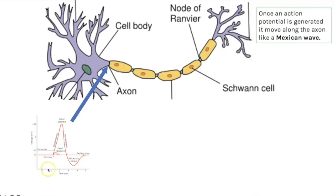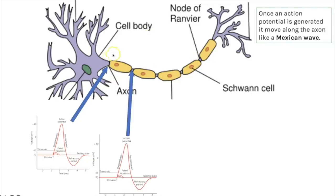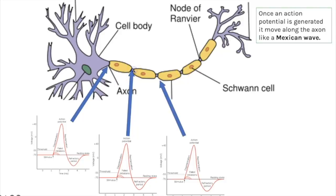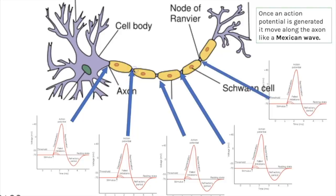The action potential moves along the axon like a Mexican wave. In a myelinated neuron, action potentials are generated at each node of Ranvier — this is saltatory conduction — and then a synapse is reached at the end. In an unmyelinated neuron, action potentials must be generated at every position along the axon, making conduction slower.